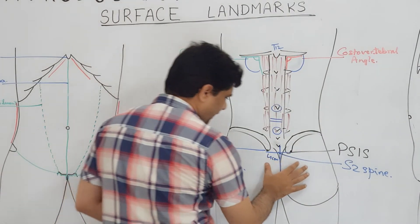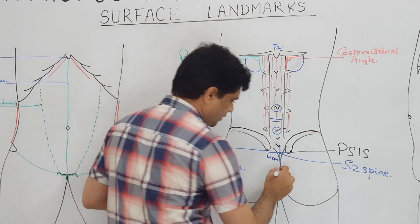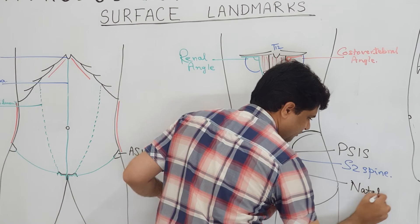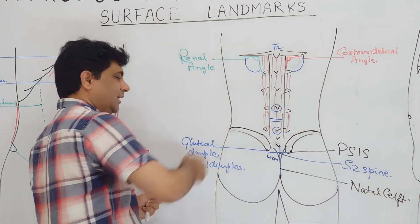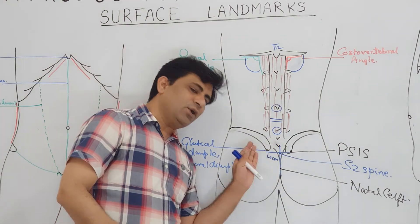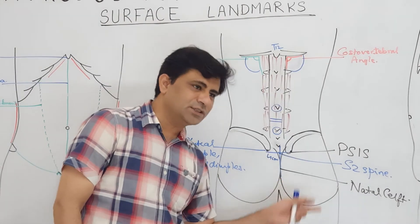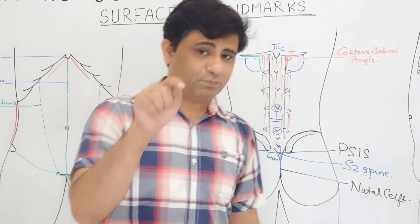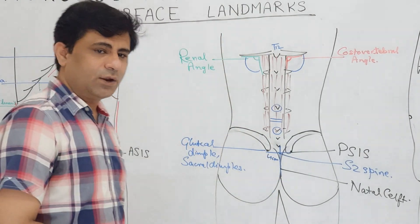The fold in the gluteal region is called the natal cleft. In the natal cleft you can also palpate S3. Reaching further down and palpating the natal cleft, you can reach down to palpating the coccyx, which lies a little behind the perineum.